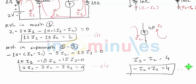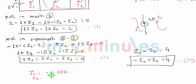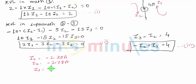We now have three equations with three unknowns. You can solve these three equations either with a calculator or using Cramer's rule, as discussed before. On solving, you get: I1 equals minus 2.35 amperes, I2 equals minus 2.78 amperes, and I3 equals 1.22 amperes.